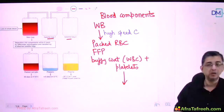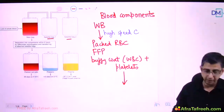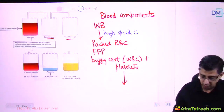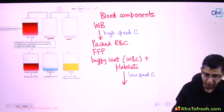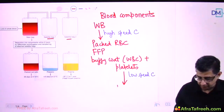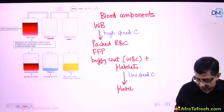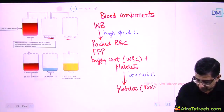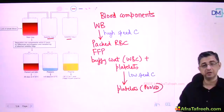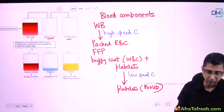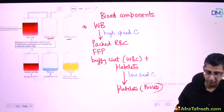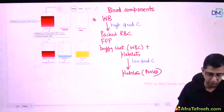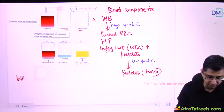The unit having the buffy coat with the platelets is subjected to a low speed centrifugation, which helps in generating platelets. These platelets are then pooled - we are talking about random donor platelets in this case. This is one method of generating blood components.